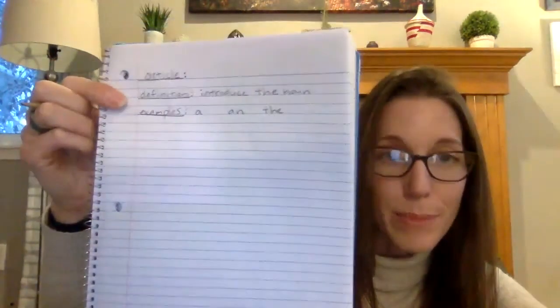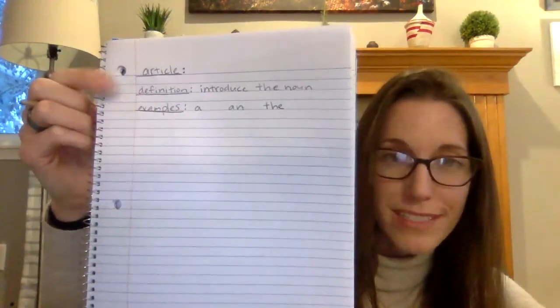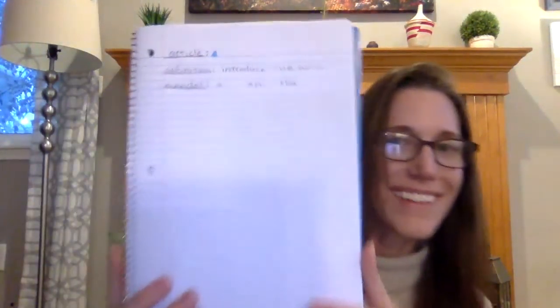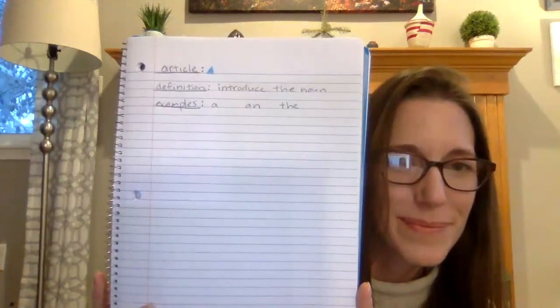Feel free to pause the video if you need time to record these. Now we also want to draw the symbol, so we're going to use our light blue triangle to draw a small symbol of the article. Now that we've heard what they are — the articles introduce the noun — let's play a little game to explore more.